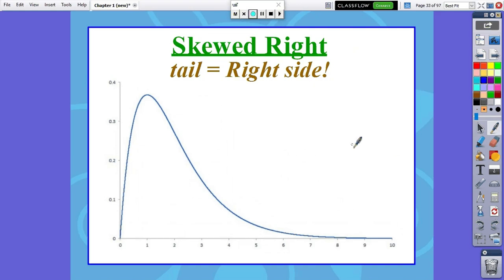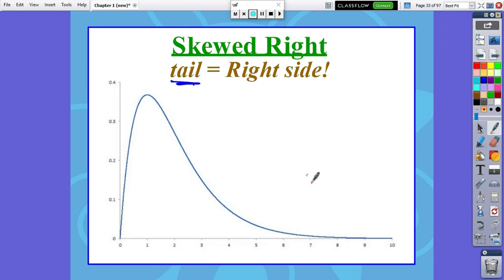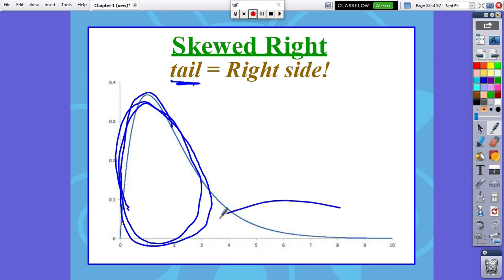Next up, the skewed distributions. We're going to talk skewed right to begin with, then skewed left. Skewed just means it's like you have an approximately normal distribution, but you push all the data on one side. All the data got pushed over to the left side, which means the direction of the skewness is always described by where the tail is. Since the tail is on the right, this is skewed right.